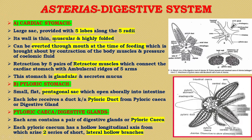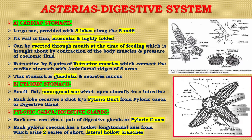As you can see in the diagram, these are the lobes of the cardiac stomach, the pyloric duct, and the pyloric stomach. The cardiac stomach can be everted through the mouth at the time of feeding, which is brought about by the contraction of body muscles and pressure of coelomic fluid. Retraction of the cardiac stomach is brought about by five pairs of retractor muscles which connect the cardiac stomach with the ambulacral ridges of the five arms. This stomach is glandular and secretes mucus.